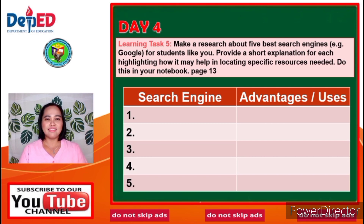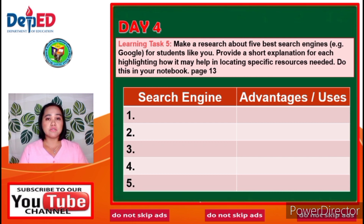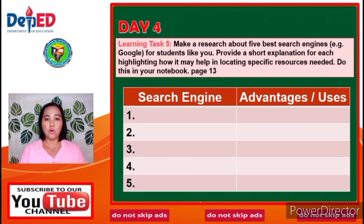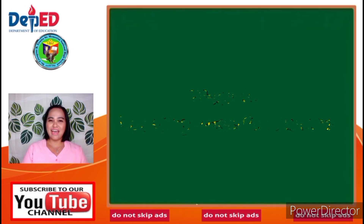Day 4 Learning Task 5: Make a research about the 5 best search engines for students, for example Google. Provide a short explanation for each, highlighting how it may help in locating specific resources needed. Do this in your notebook on page 13.